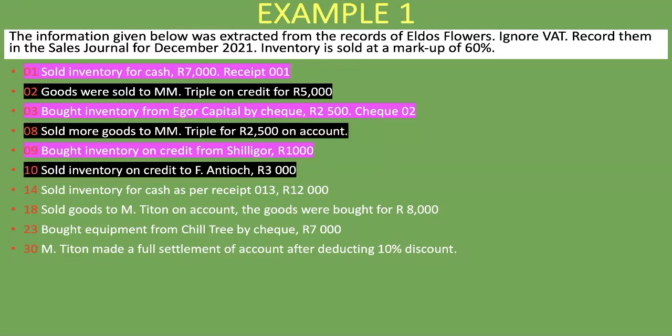On the 14th day of the month, we sold inventory for cash as per receipt 013, 12,000 Rand. This does not go in the sales journal because it was a cash sale, not a credit sale. We highlight it in purple.